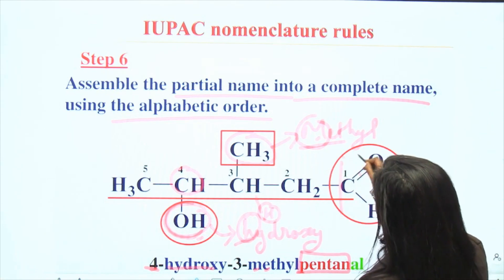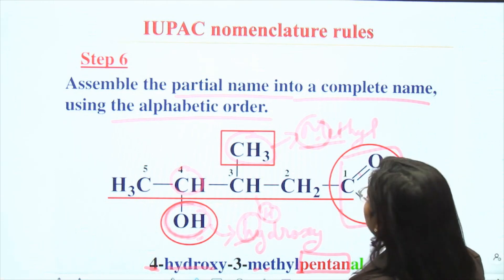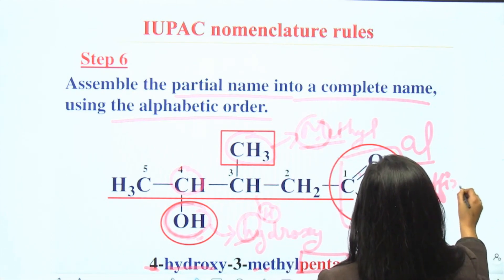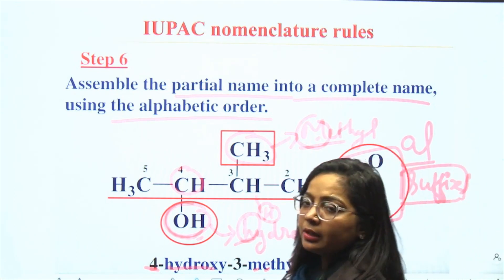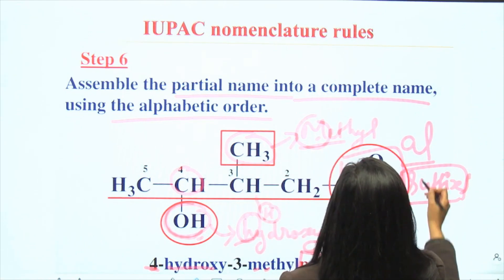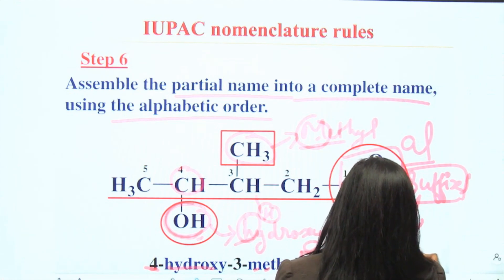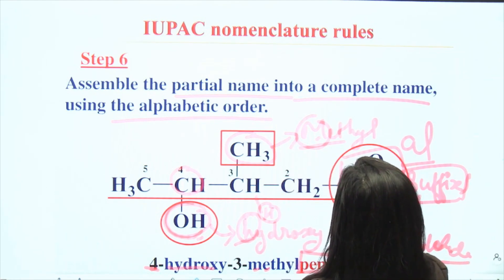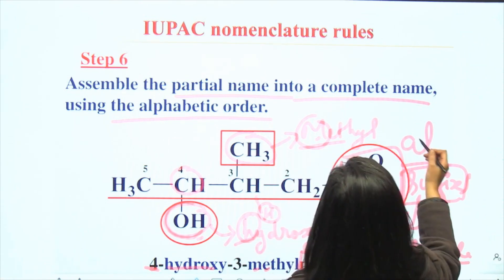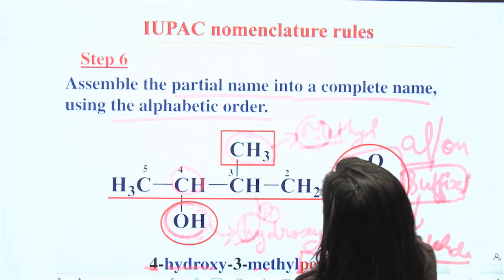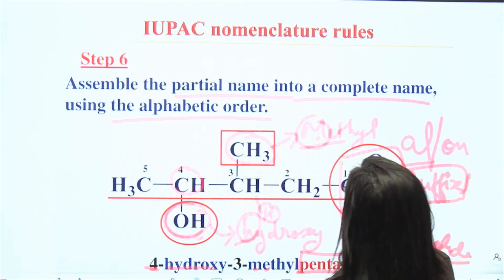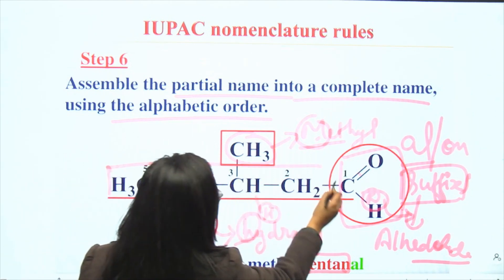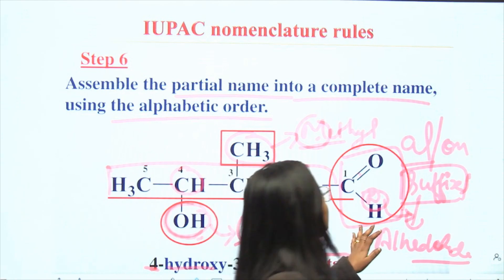Now it comes to the functional group suffix. Our main functional group is the carbonyl, specifically an aldehyde. For an aldehyde functional group, we use the suffix 'al'. If instead a ketone were present, we would use the suffix 'one'. But in this example an aldehyde is present, so we use 'al' as the suffix. Therefore the complete name is 4-hydroxy-3-methyl pentanal.